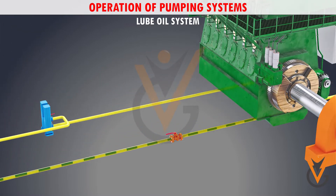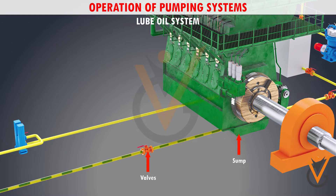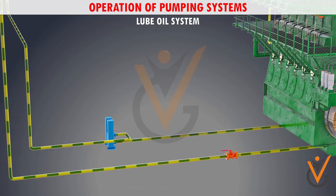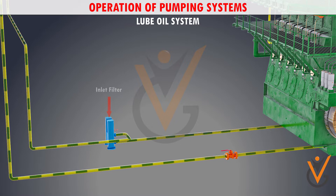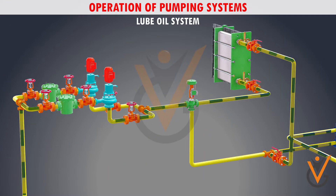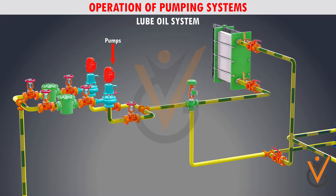The lube oil for lubrication is taken from the storage tank, which goes directly to the sump. The supply is controlled by valves fitted in the line. The main lube oil pumps take suction from the main engine sump tank via an inlet filter and discharge oil via the main lube oil cooler. One pump operates while the other is on standby, set for automatic cut-in should there be a pressure reduction or primary pump failure.